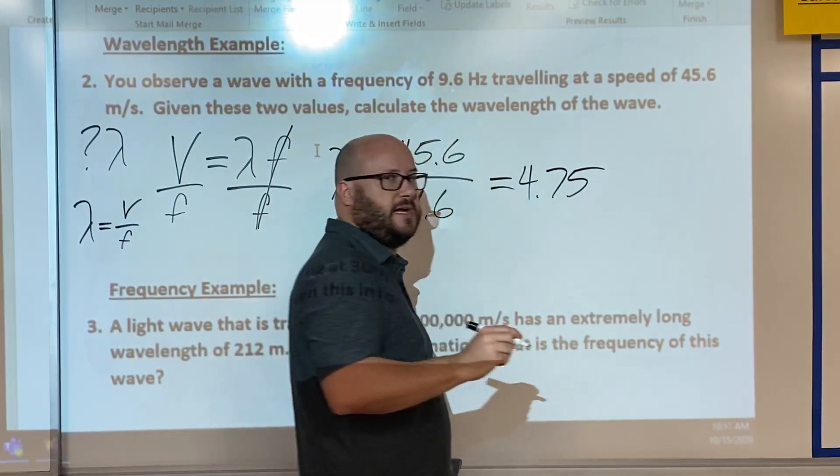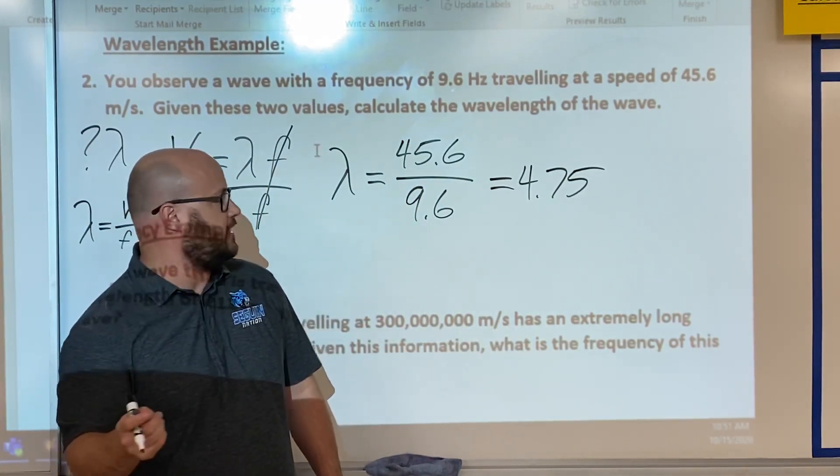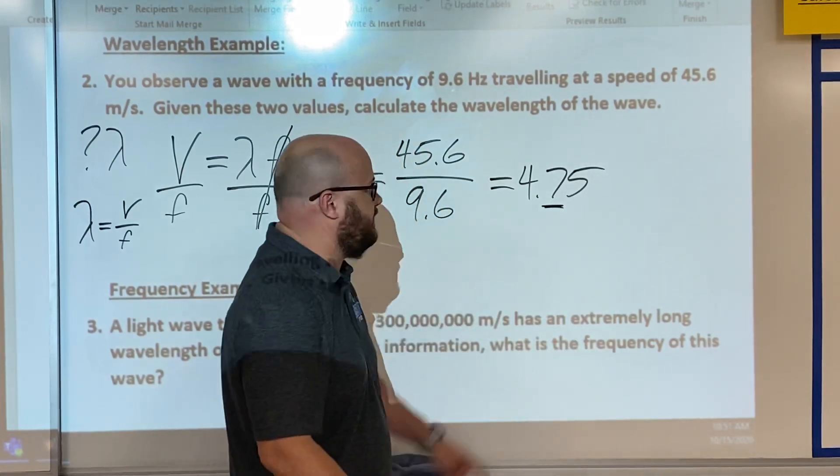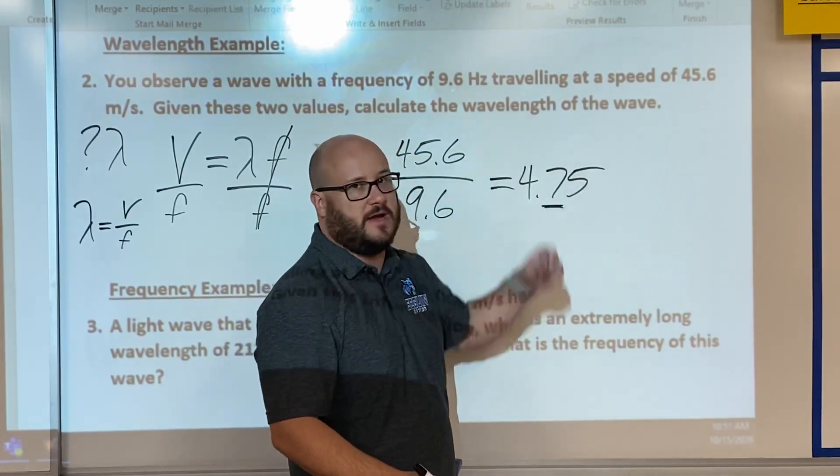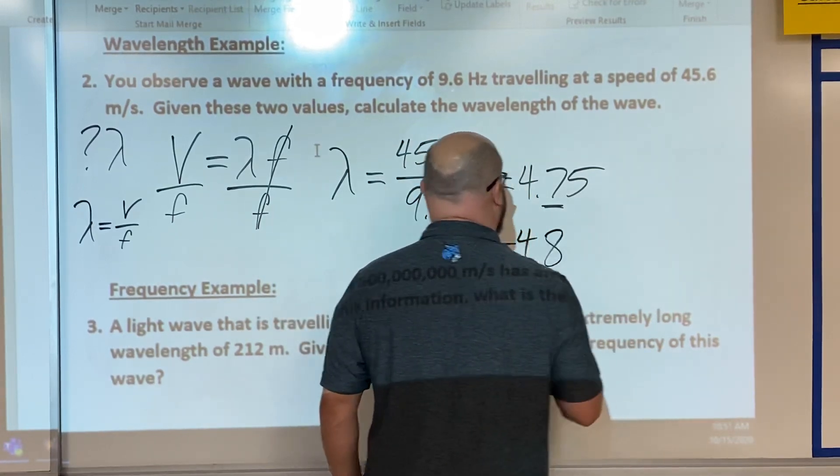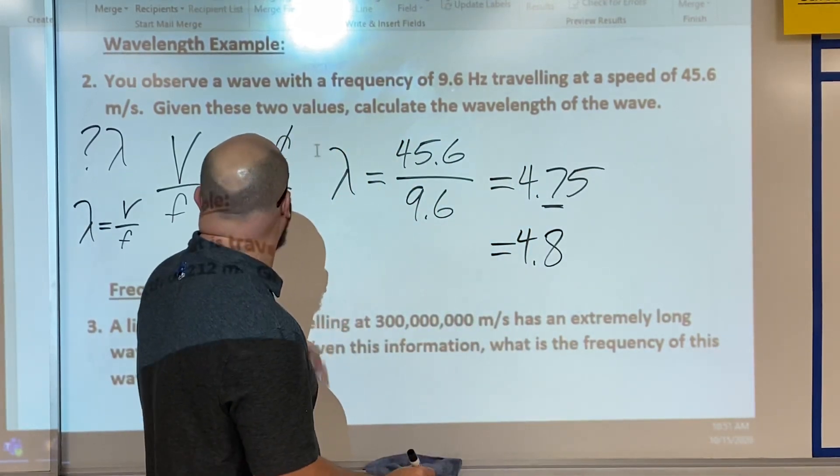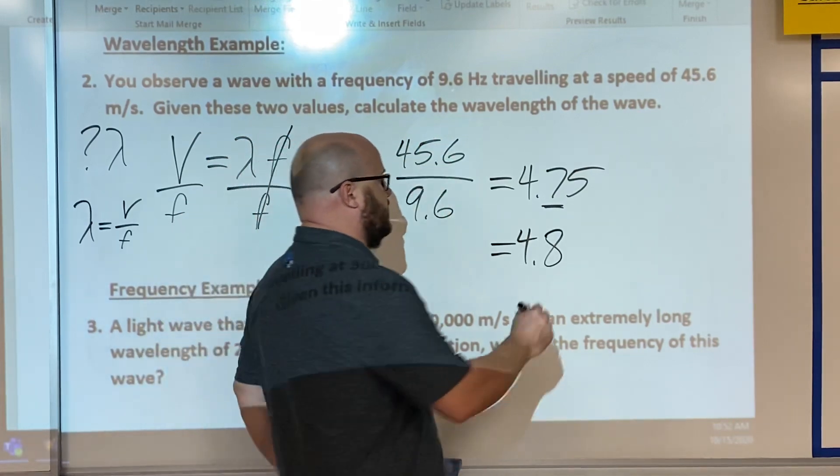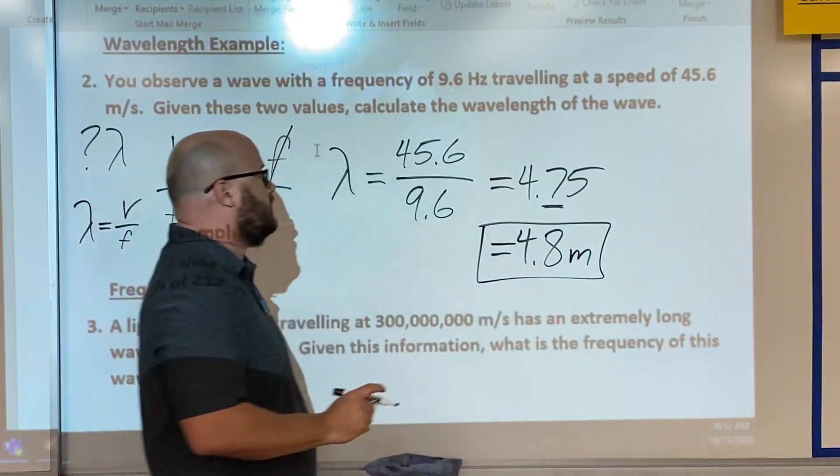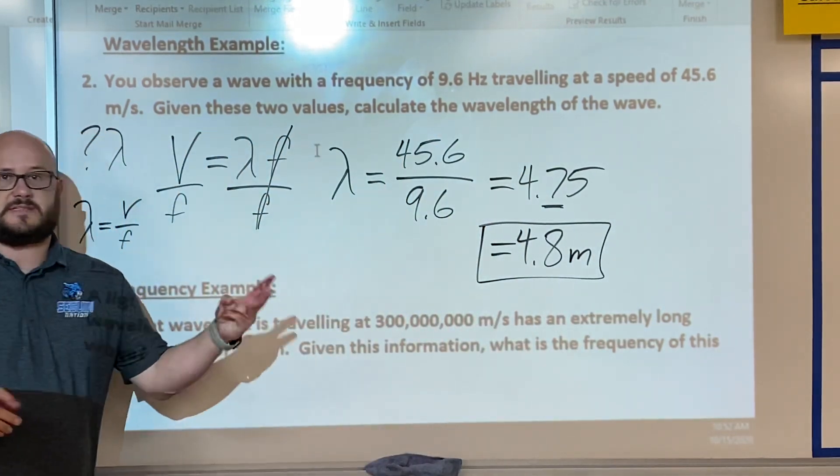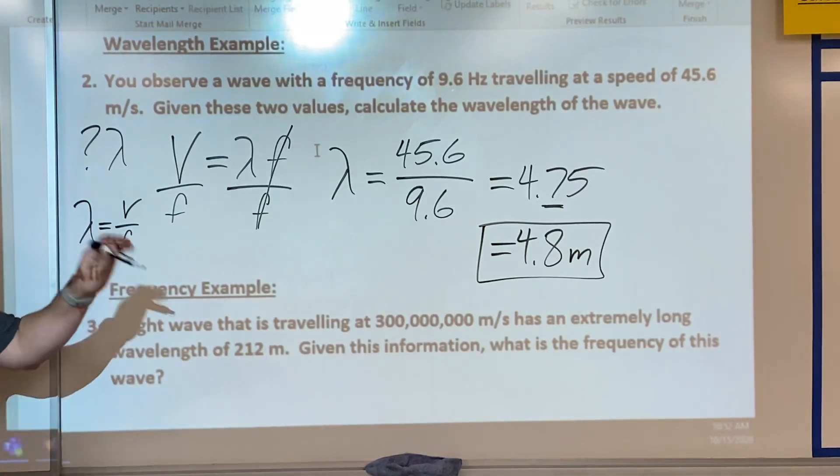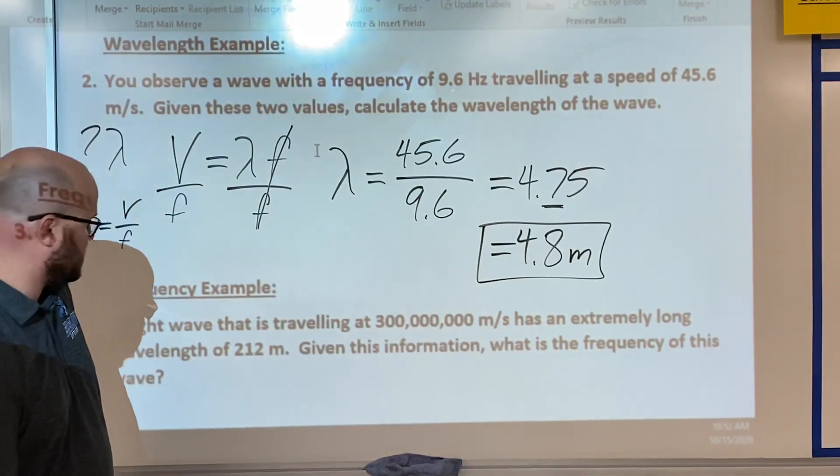And on the quiz I'm generally going to tell you to round this to one decimal place. So if that's the point, we're going to round to that seven five rounds up, so our final answer would be 4.8, and since it's a wavelength it's going to be meters. So that's example number two.